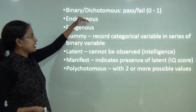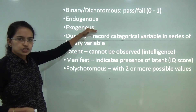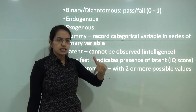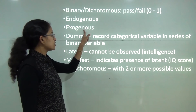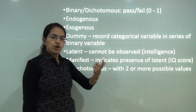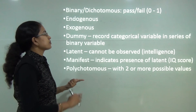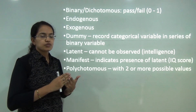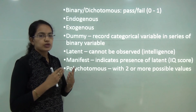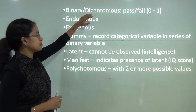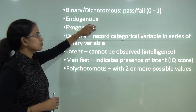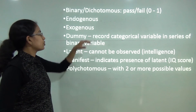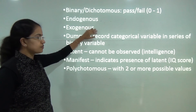Then you have endogenous and exogenous variables. Endogenous variables lie within the system, and exogenous are those affected from outside. In the ice cream leads to fever example, parameters affecting fever from inside — like cold or cough — are endogenous variables. Those parameters affecting from outside, like weather conditions, are exogenous variables.